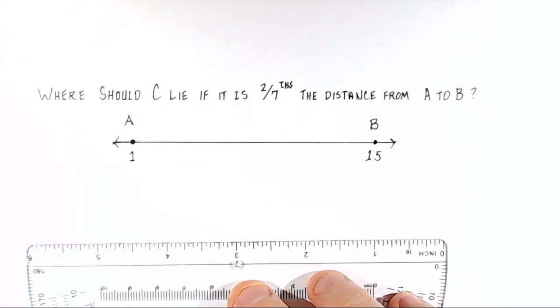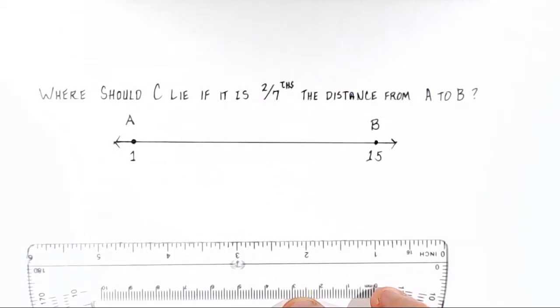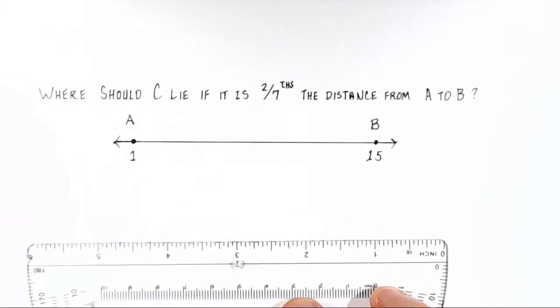Okay, so let's take a look at this problem and analyze the picture. The problem asks, where should point C lie if it is two-sevenths the distance from point A to point B?